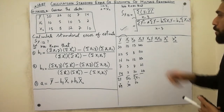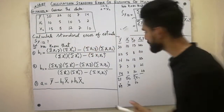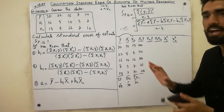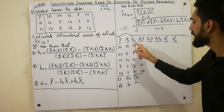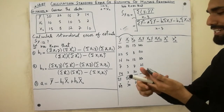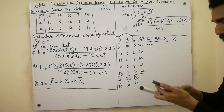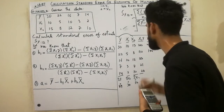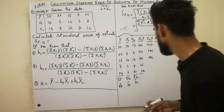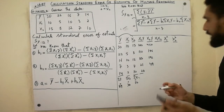Next we calculate x2y by multiplying each x2 by its corresponding y: 30 times 15 gives 450; 22 times 8 gives 176; 16 times 12 gives 192; 7 times 7 gives 49; and 14 times 10 gives 140.